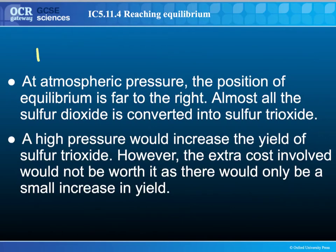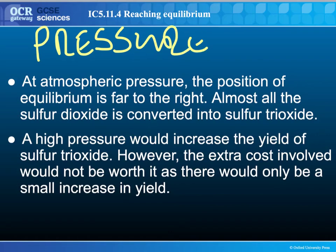Next we need to look at pressure. This is also an example where the rules aren't strictly followed. Increasing the pressure would increase the yield of sulfur trioxide because there is a lower volume of sulfur trioxide than sulfur dioxide and oxygen. However, the position of equilibrium in this reaction is already far to the right-hand side, and increasing pressure is an extremely expensive process. So they do it at atmospheric pressure, get a high enough yield, and don't increase the cost.